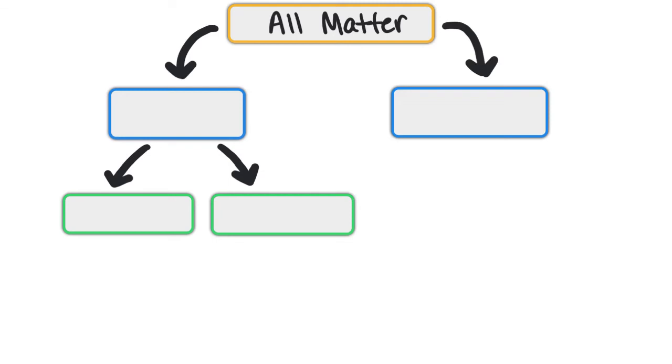In today's video we're going to be talking about matter and how matter can be classified into different categories. Remember, matter is basically everything that's on earth - everything that you can see, touch, taste. All of these things have matter.